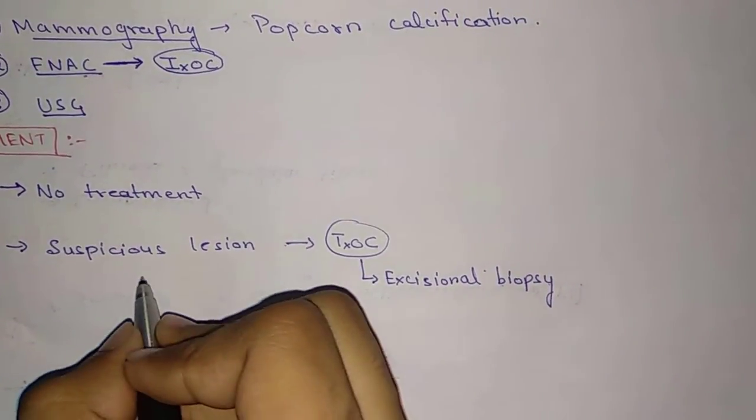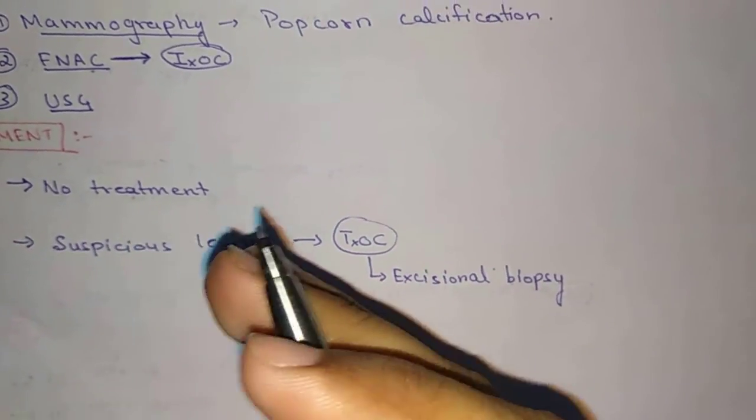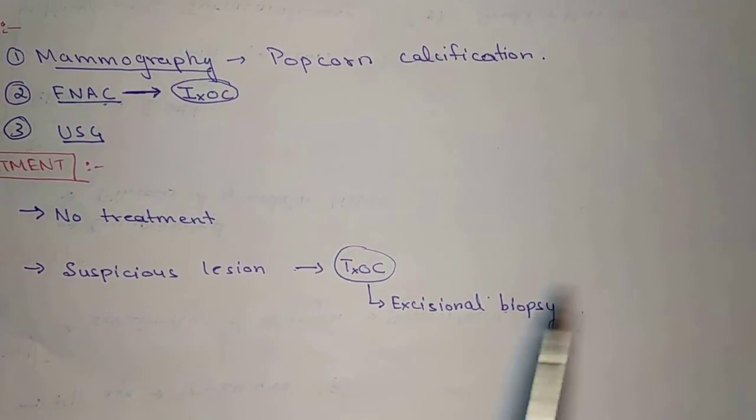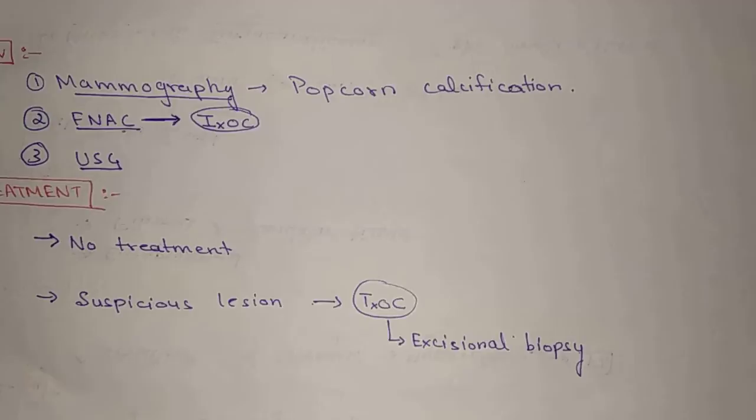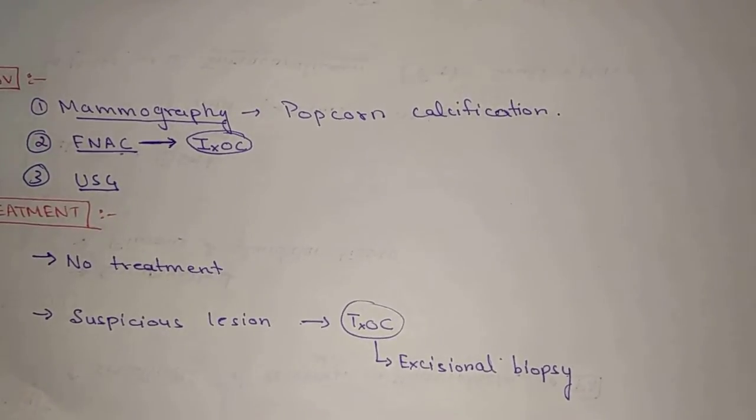In excision biopsy, an incision is given which is circumareolar or submammary incision, and then we take out the lesion. This is the surgery excision biopsy that is done in fibroadenoma.